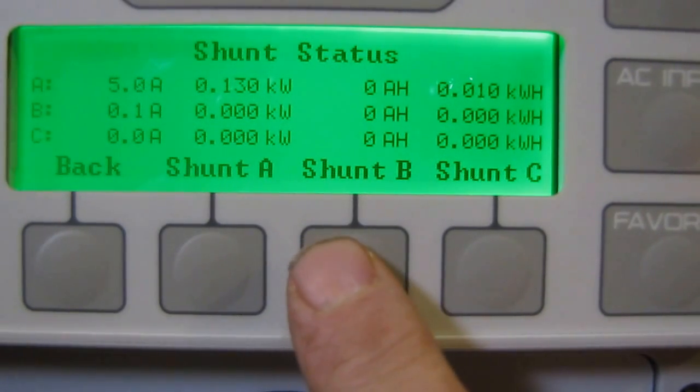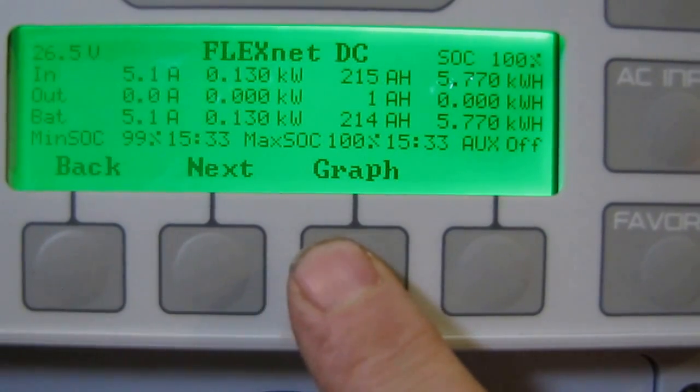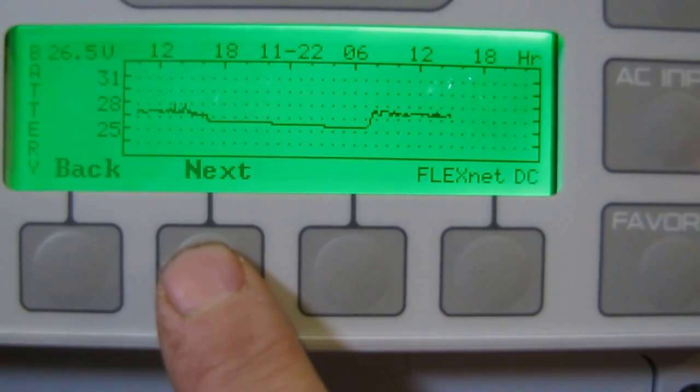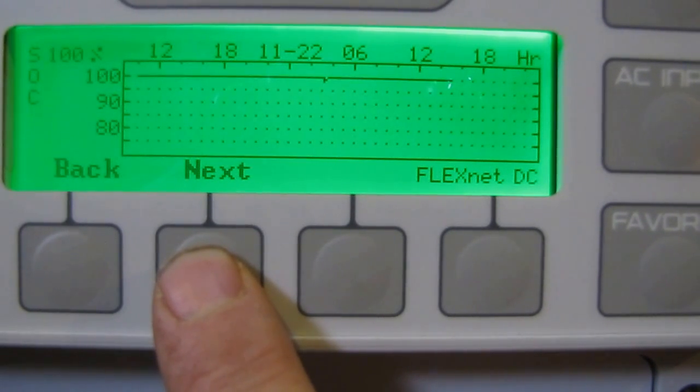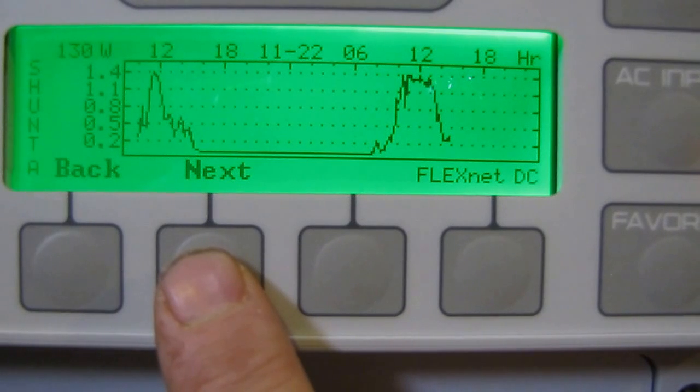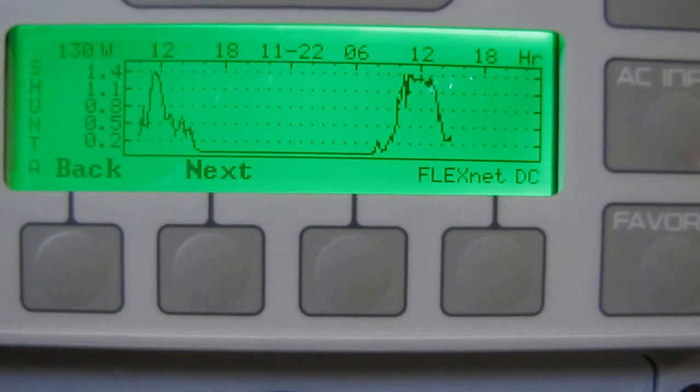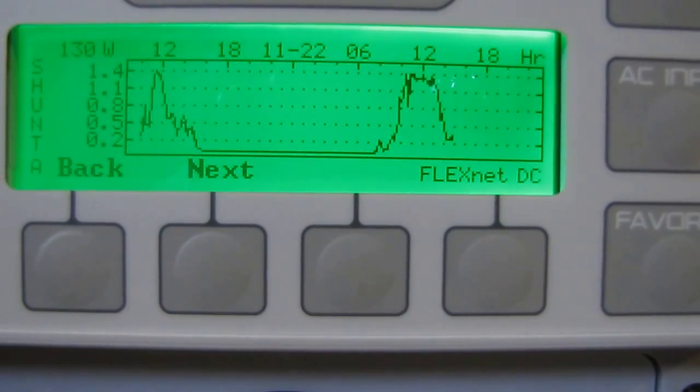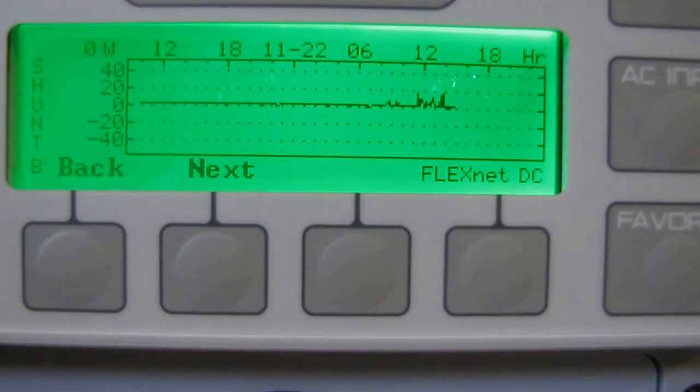Let's go back to Shunt B and then to graph. That's the battery, what it's doing right now on the FLEXnet DC. This is showing me all the stuff on the Outback Mate 3. State of charge 100% - that's over a 24-hour period. That's Shunt A showing the history of what kind of power we've been putting out today. Through the power output right now, we're putting out 130 watts of solar power. You can see on the top left-hand corner, 130 watts. Next is Shunt B, and that's the wind.